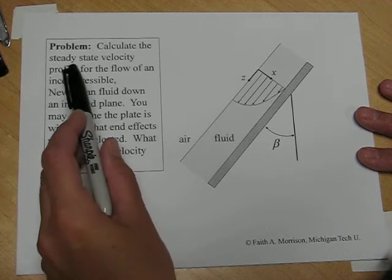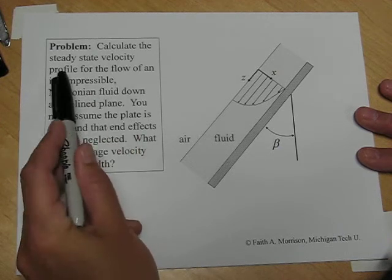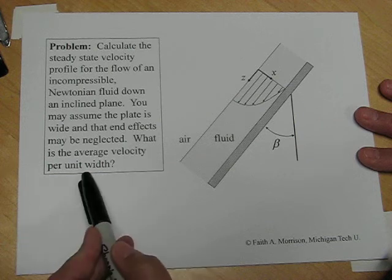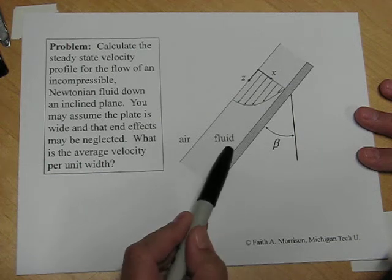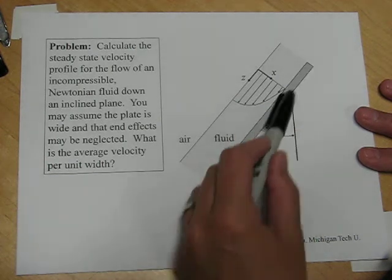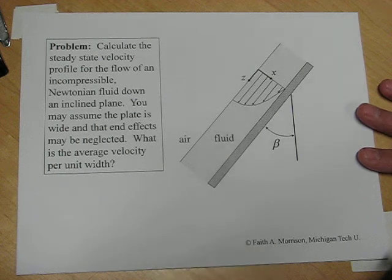The purpose of calculating this steady state velocity profile would be to calculate something like the average velocity per unit width, or the force on the plate, which we dealt with at other times.